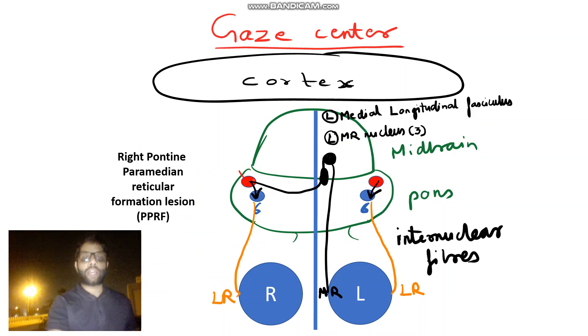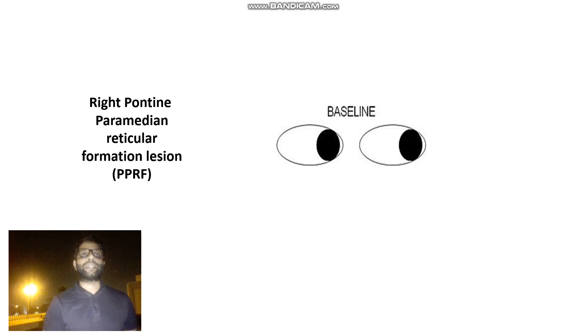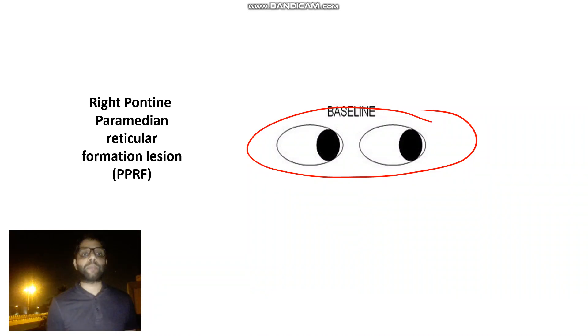For example, this right PPRF is having destruction, lesion. What will happen? Right LR will not work properly and also the left MR will not work properly. Now you will say, sir, left MR is supplied by third nerve also. Yeah, I agree. But this is the center PPRF. So entire pathway is not working. So that is why in right PPRF lesion, the patient will come to you with this. Eyes deviated on the left side. But here the patient gazes conjugate. So no diplopia will be there in this patient. Alright. So that is right PPRF.